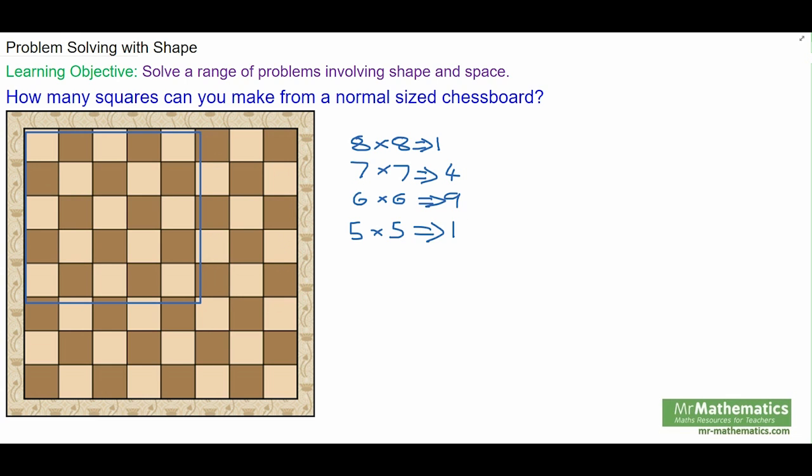So that will be, for a four by four, there will be twenty-five squares. For a three by three, there will be thirty-six squares.